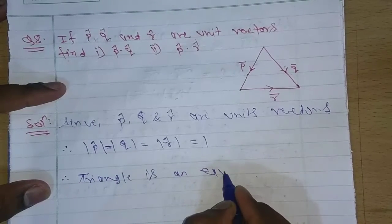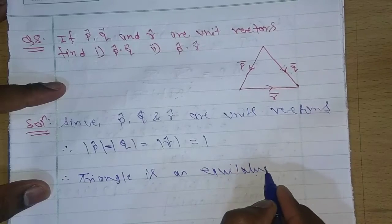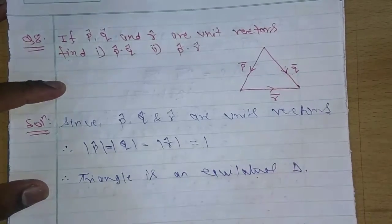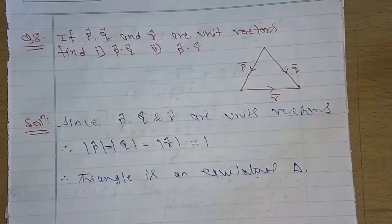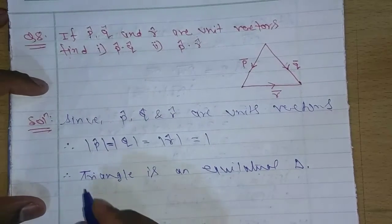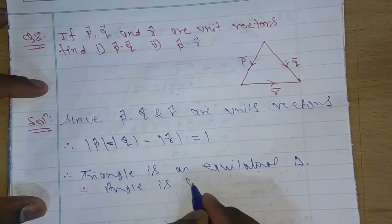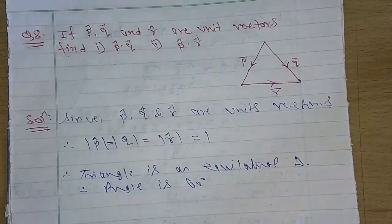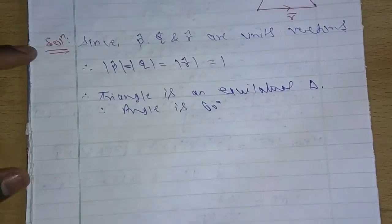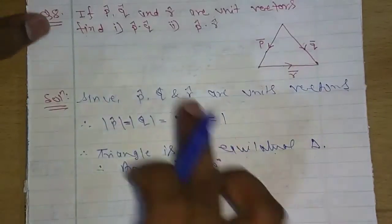And what? Equilateral triangle. If equilateral triangle, what is the angle here? Angle is 60 degrees. What is angle here? Angle is 60 degrees.